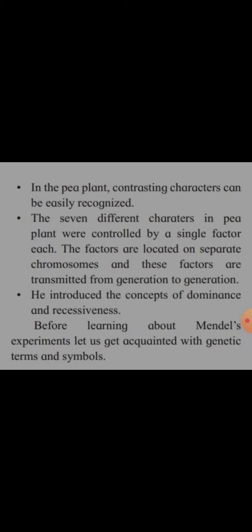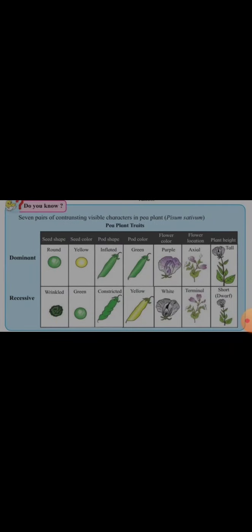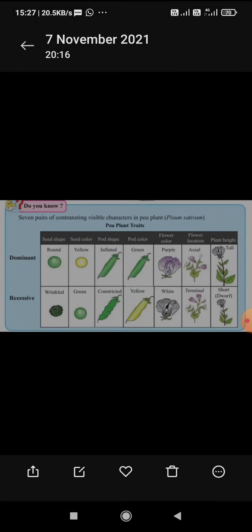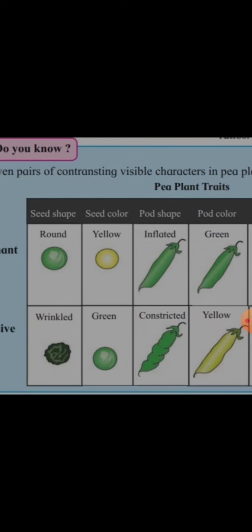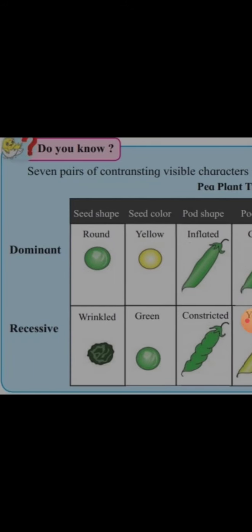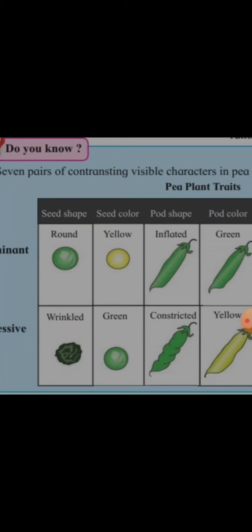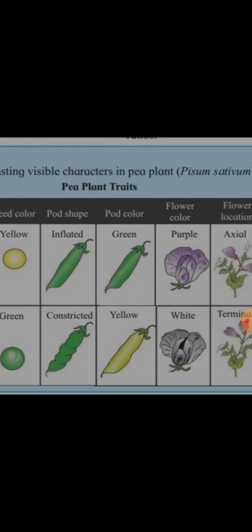Mendel introduced the concept of dominance and recessiveness. Before learning about Mendel's experiments, we should get acquainted with the genetic terms and symbols. But first, we are going to see the seven different characteristics which Mendel studied — the seven pairs of contrasting characters in the pea plant, Pisum sativum, with their dominant and recessive forms.